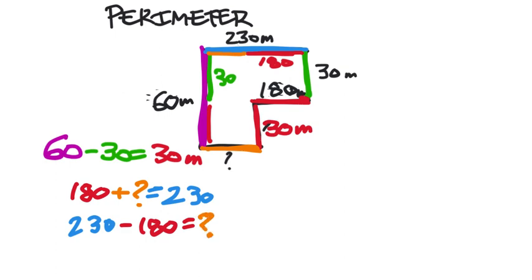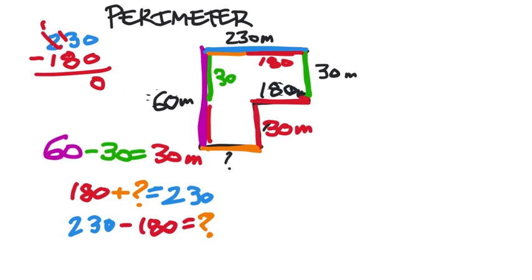So 230 minus 180: 0 minus 0 is 0, but 3 minus 8 means I have to borrow from the hundreds. 13 minus 8 is 5, and 1 minus 1 is 0, so it becomes 50. This length in orange is 50 meters.